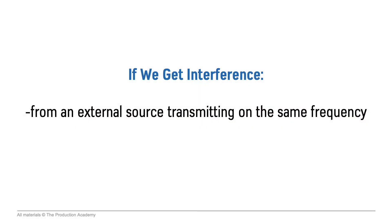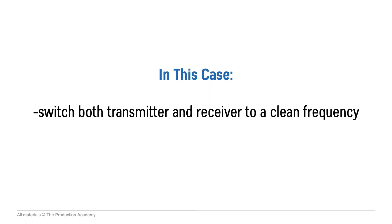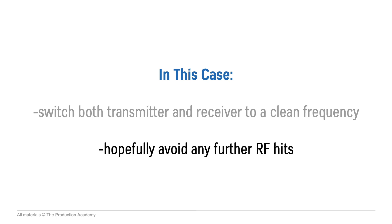If we do get interference from an external source transmitting on the same frequencies that we are, we can start to hear some dropouts. In that case, we can switch both our transmitter and receiver to a clean frequency and hopefully avoid any further RF hits. However, as soon as we are operating more than one wireless system and transmitting on two or more frequencies, we have to worry about intermodulation.